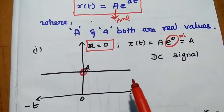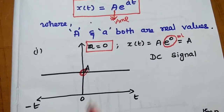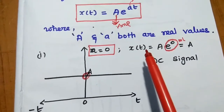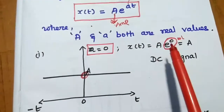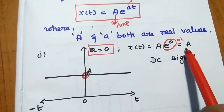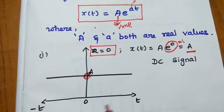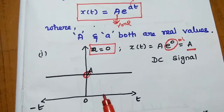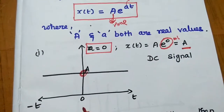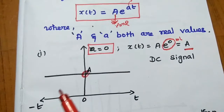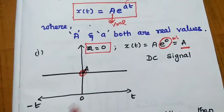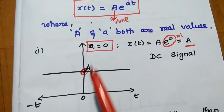We can have different cases for this small 'a'. Consider if small 'a' is equal to 0. Then x(t) = A·e^(at) becomes A·e^0 = A. At that time, the exponential signal can be represented like a DC signal. The amplitude is defined as where the signal curve crosses the y-axis, where the x-axis is time and y-axis is amplitude.